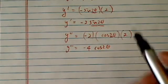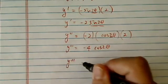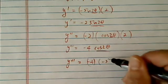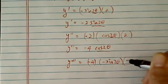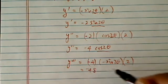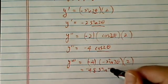And from there, we're going to start the cycle all over again, so triple prime is minus 4, this one is minus sine 2 theta, and you have to do 2 again, so it's minus 8, actually plus 8, sine of 2 theta.